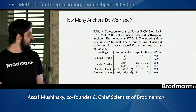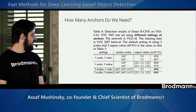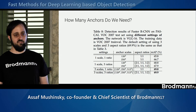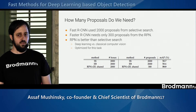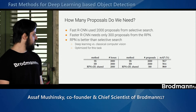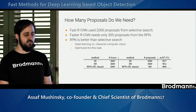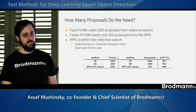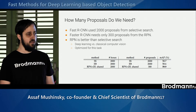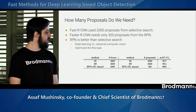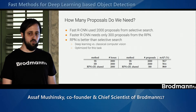An ablation study explored how many proposals and anchors are needed. They found you need at least three scales with one ratio — possibly more for difficult datasets. Importantly, the number of proposals actually decreased. Selective search or edge boxes would need 2,000 boxes for good recall, but since the RPN is trained specifically for these objects using deep learning rather than classical computer vision heuristics, 300 proposals is enough — meaning the next stage is also faster.